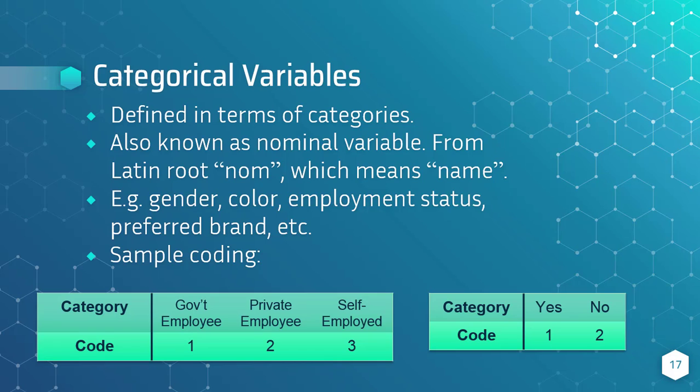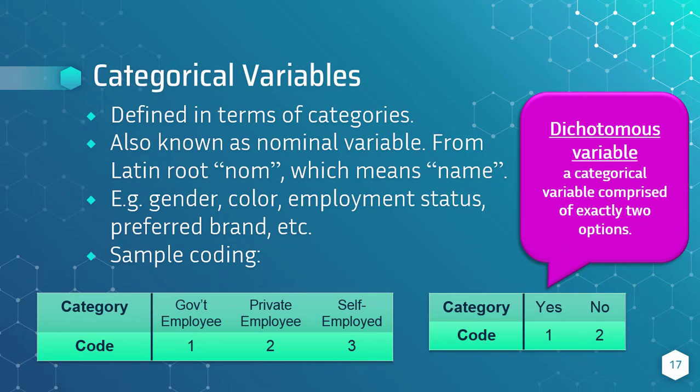There is a special type of categorical variable — the dichotomous variable. This example is of dichotomous type because it has exactly two options. Another example would be male or female, or true or false.